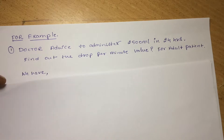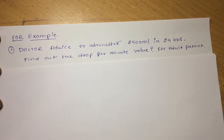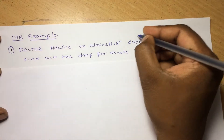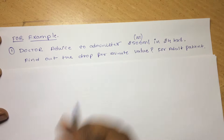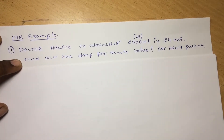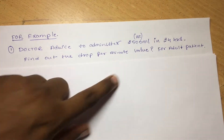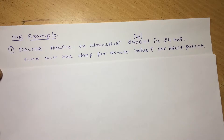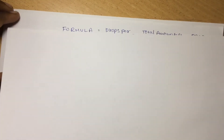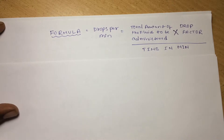First, you have to know the question. The doctor advises to administer 2500 ml in 24 hours — that would be NS, RL, or DNS. Find out the drops per minute value for an adult patient. This is the doctor's advice for nurses to administer to the patient.